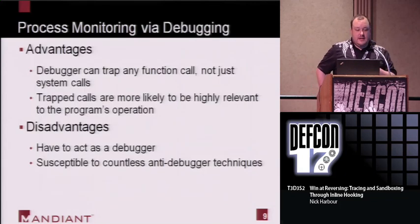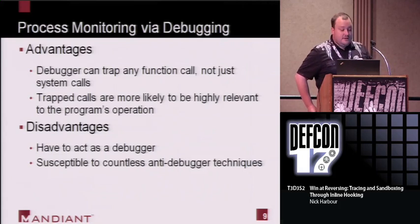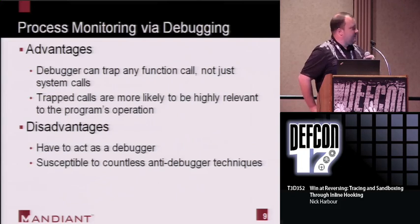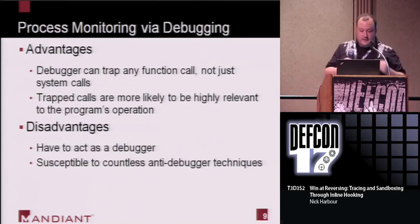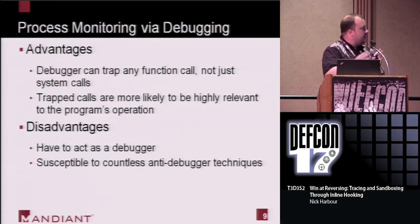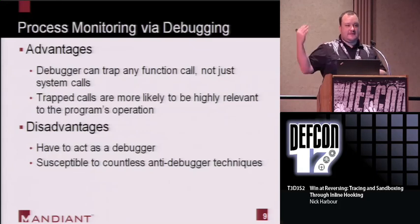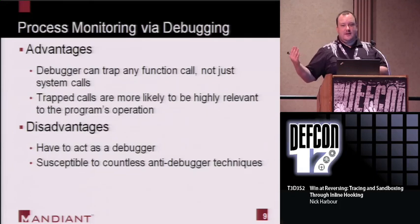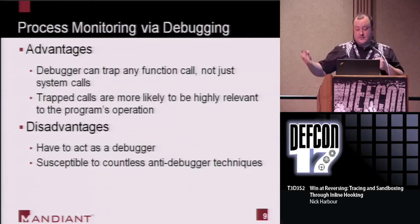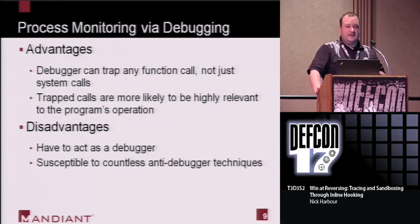Another technique for API call monitoring is using a debugger, which is pretty good. You can trap function calls all day long, not just system calls. A lot of what I'm going to be doing you can certainly implement in a debugger, and a scripted debugger is a very good solution. The trap calls can be highly relevant to the program's operation. The main disadvantage is you have to act as a debugger, which throws you into the cat and mouse game of debugging, anti-debugging, anti-anti-debugging. I was looking for an easy, cheap way to get this functionality without involving a debugger whatsoever.